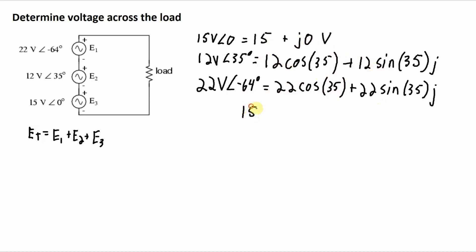Well, the first one is 15 plus J0. The second number is 9.8298 plus J6.8829. And the third value.